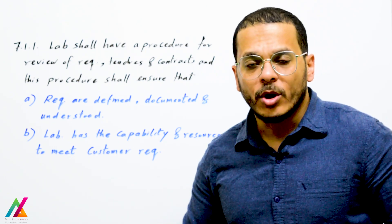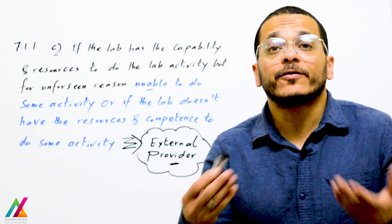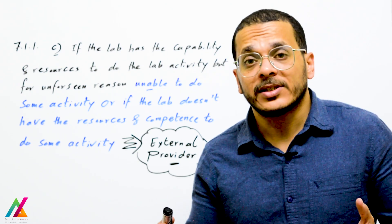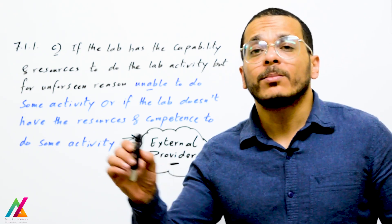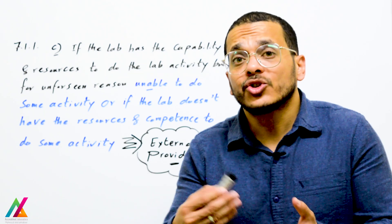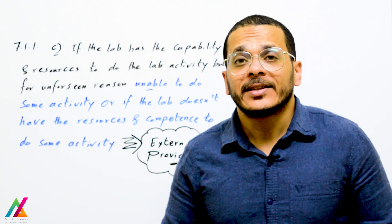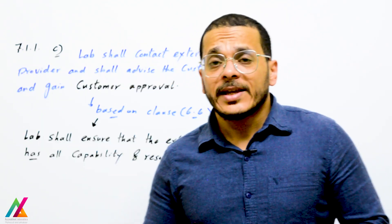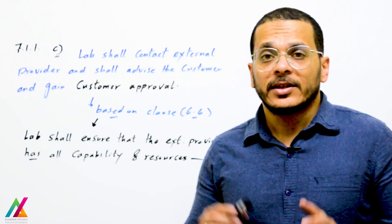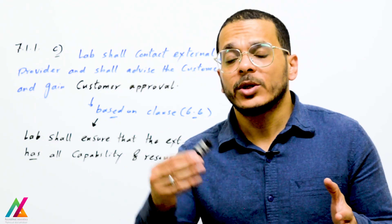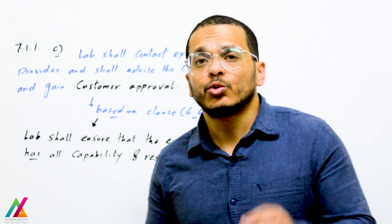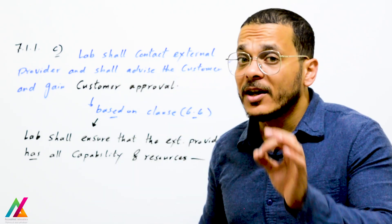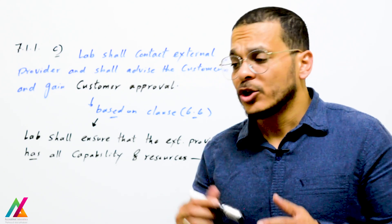If the lab has the capability and resources to perform a lab activity but for unforeseen reasons cannot do some activity — they don't have the competence, capability, or resources — the lab shall contact an external provider. The lab will make a temporary subcontract with the external provider for some time to perform this activity until they obtain the required resources. The lab shall advise the customer and gain customer approval before proceeding.